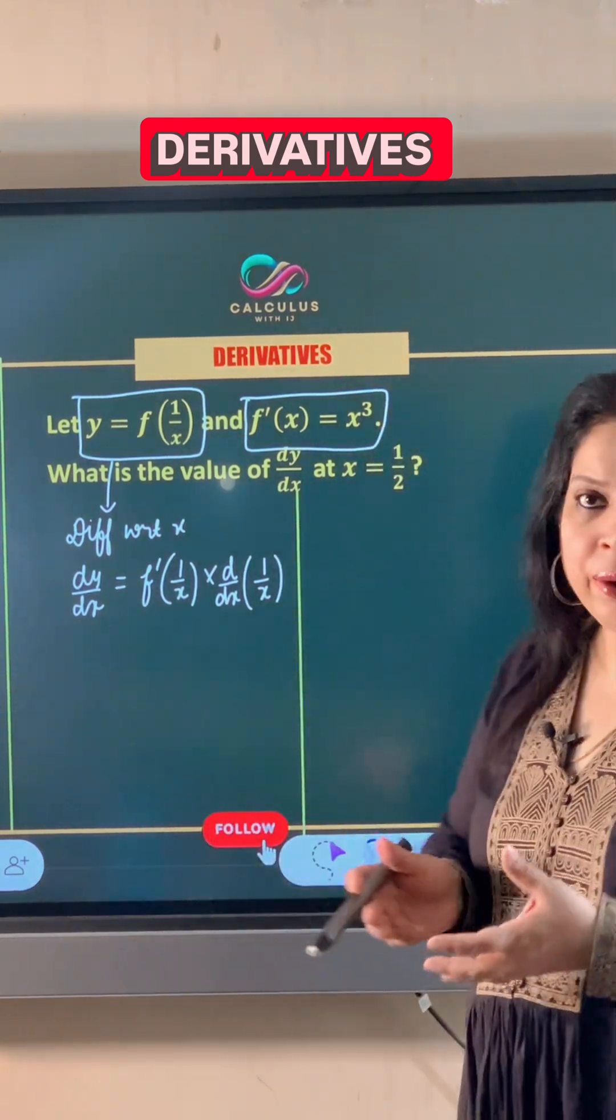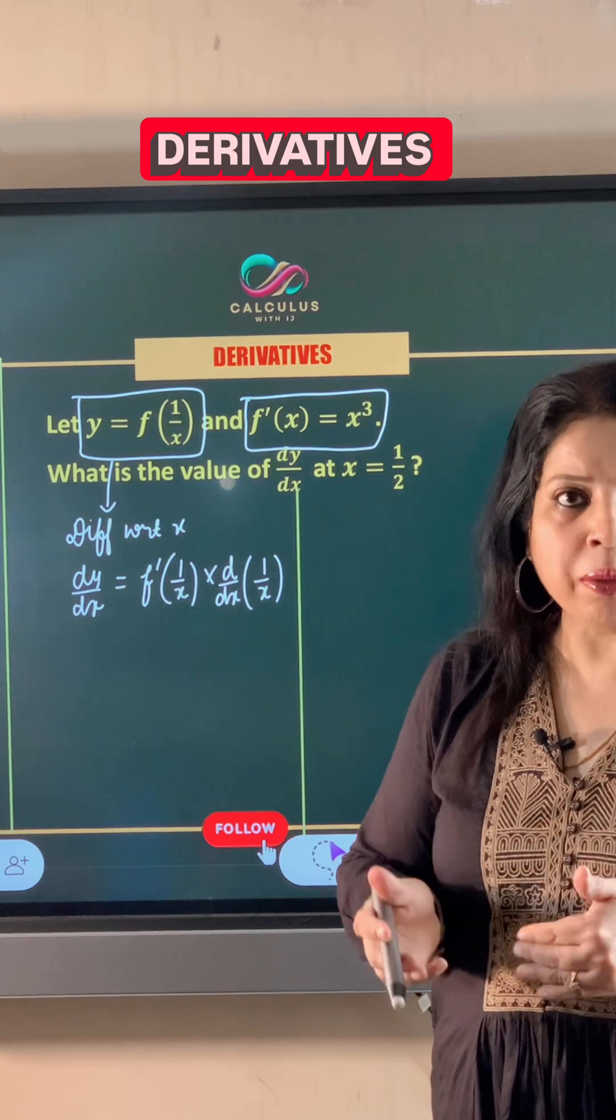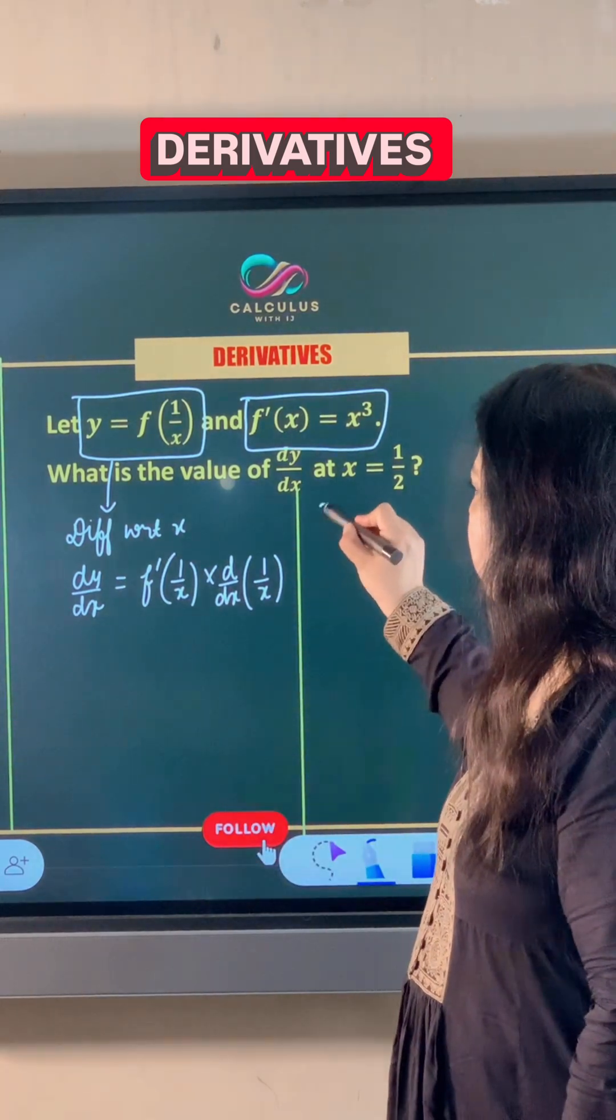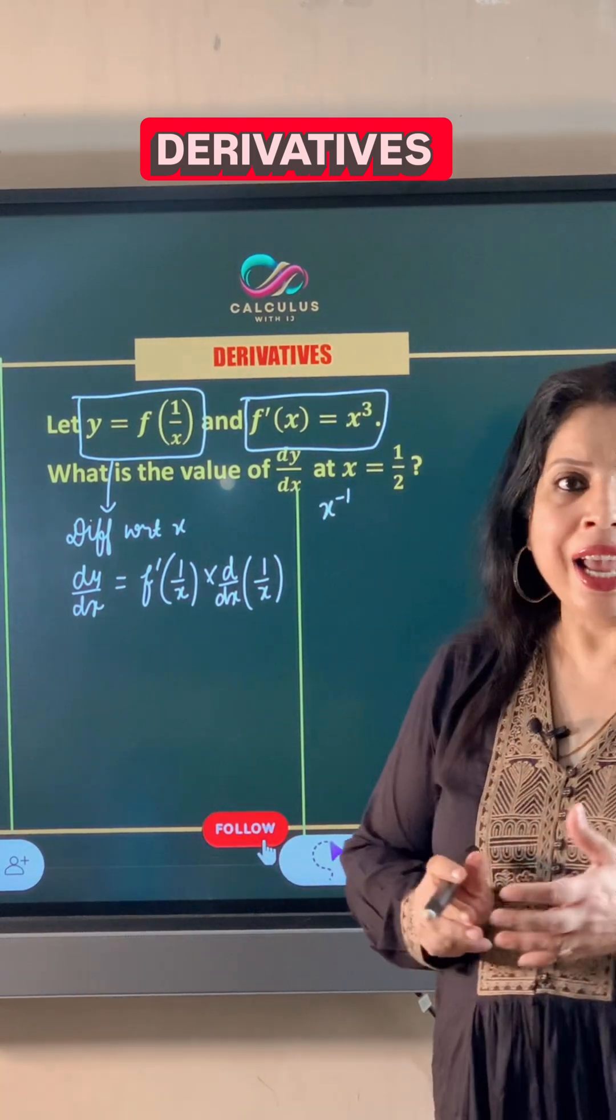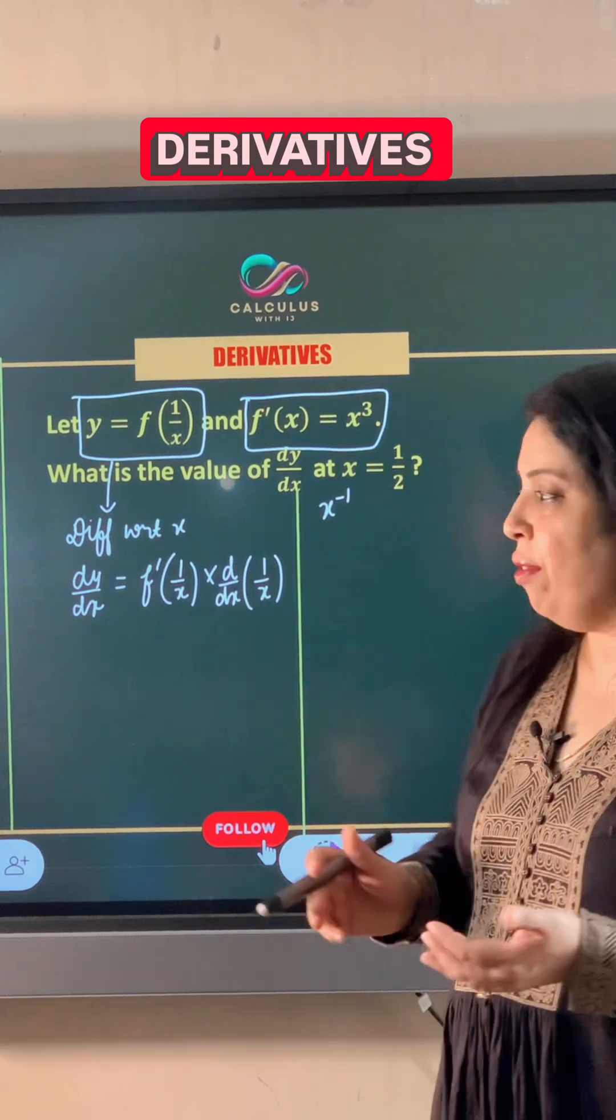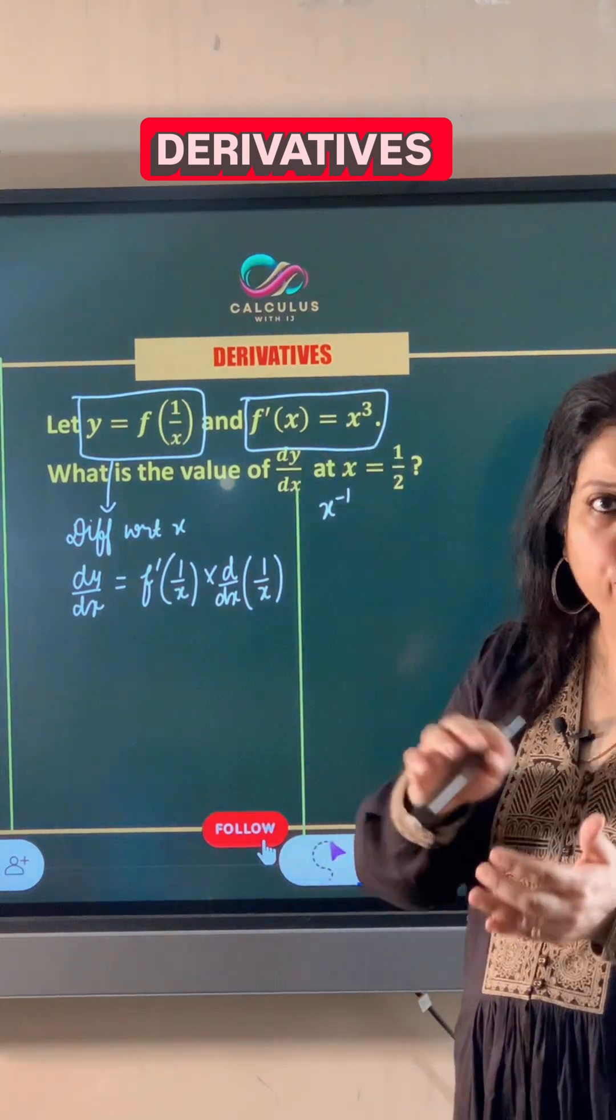Now, what is the derivative of 1 upon x? 1 upon x can be written as x to the power minus 1, and when we take its derivative, minus 1 comes before x.